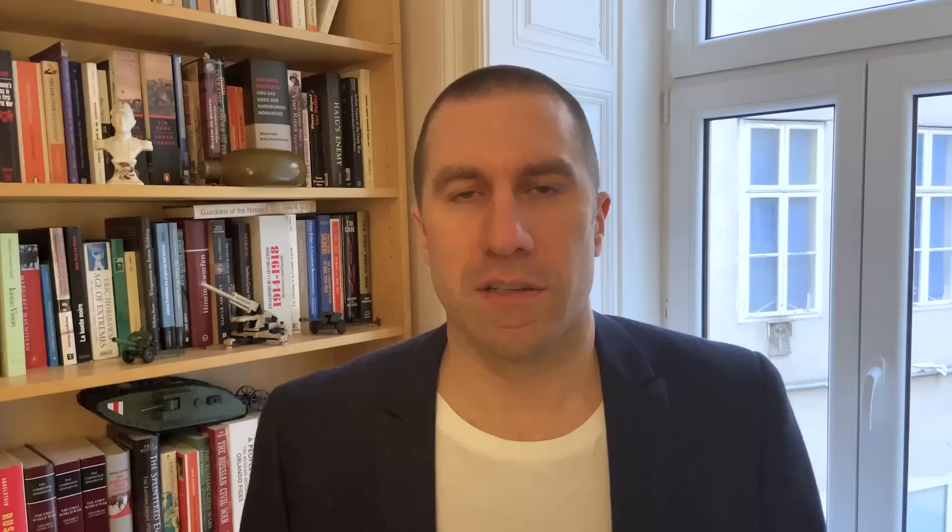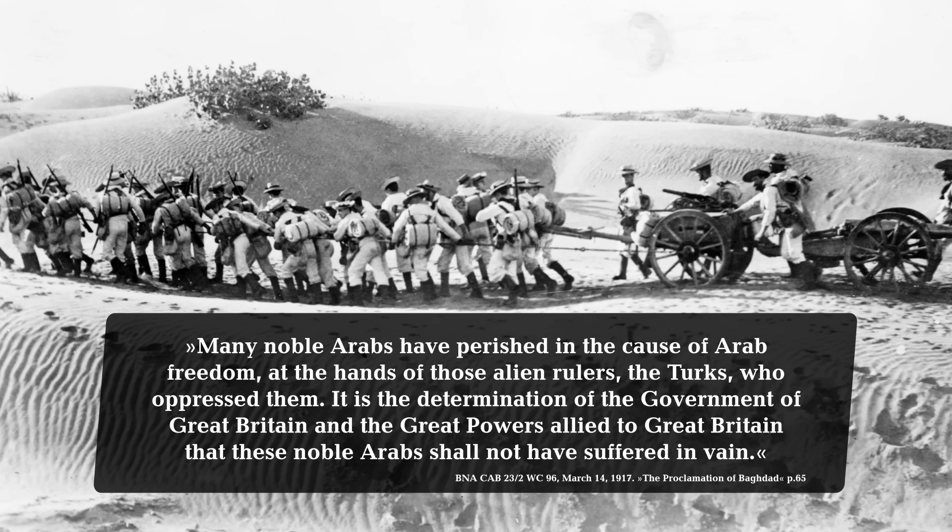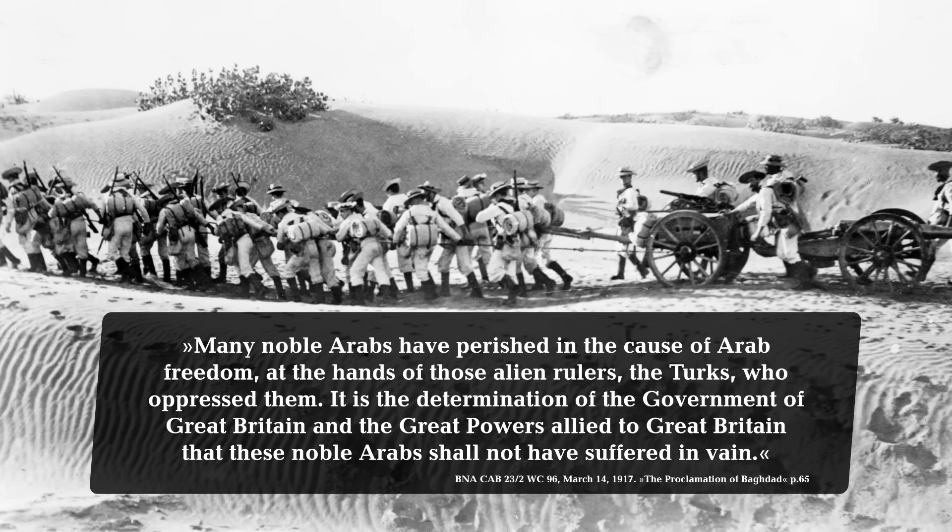Then the British made another promise that further complicated the situation. They issued the Balfour Declaration in 1917, stating that the British government would help the Jews establish a homeland in Palestine. The British were portraying themselves as the liberators of different peoples who had been under the so-called Ottoman yoke: 'It is the determination of the government of Great Britain and the great powers allied to Great Britain that these noble Arabs shall not have suffered in vain.'